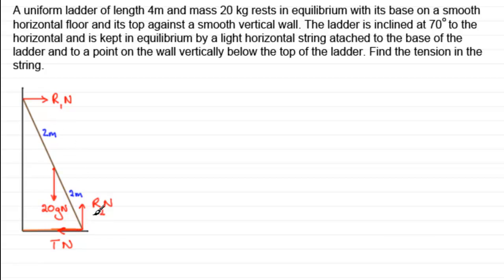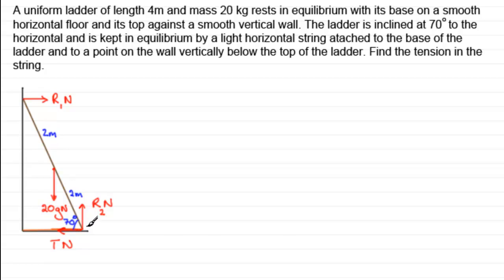Those are all the forces acting on the ladder. We're also told the angle is 70 degrees to the horizontal — let's mark that in. To find the tension T, we handle this by resolving and taking moments. We can take moments about any point along the ladder and still get the correct answer, but there's generally one best choice. For this problem, where we want to find T, it's best to take moments about point A at the base of the ladder.